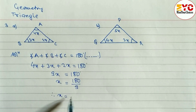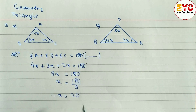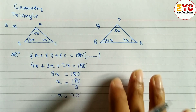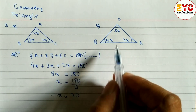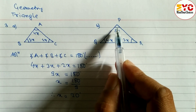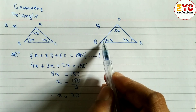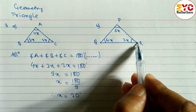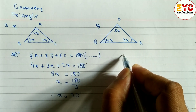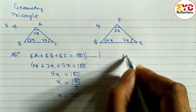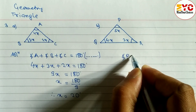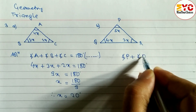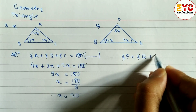Now look at this question — it is also a similar type of question. So when you add these three angles, angle P, angle Q, and angle R, we get 180 degrees. The reason is the same: the sum of angles of a triangle.